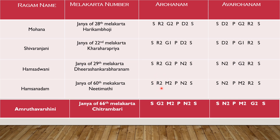So just remove Chathushrutirishabham and place Antara Gandharam and you will get Amruta Varshini. These are the 5 Audava ragas, each containing only 5 swaras. By just replacing 1 or 2 notes we are getting them. Keep waiting for the next video. Thank you.